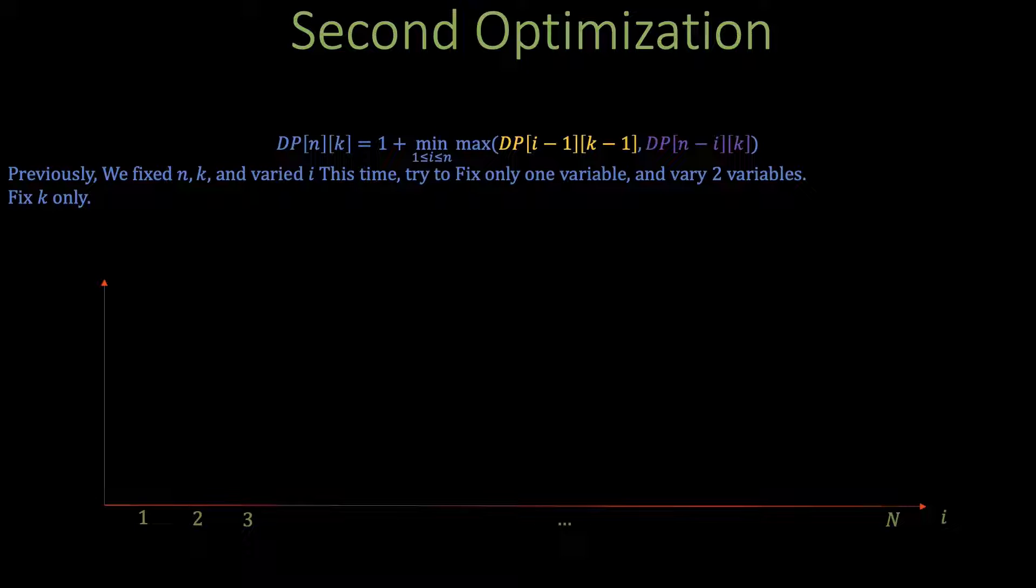Well for starters as we vary n the term dp[i-1][k-1] will not change because it doesn't contain n in its arguments so we can just plot it as we vary i which as we discussed previously is an increasing function because we are searching more and more floors as i increases.